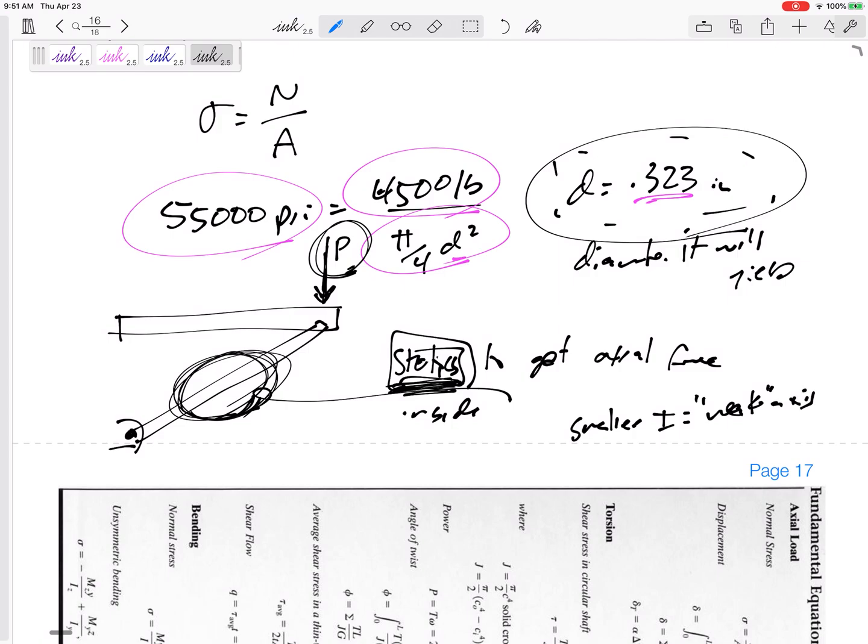So if they are both supported the same way, it's going to buckle about the weak axis. If they're both pinned and pinned, then you don't have to test the strong axis. It's going to buckle about the weak axis. If they're both fixed and fixed, it's going to buckle about the weak axis.